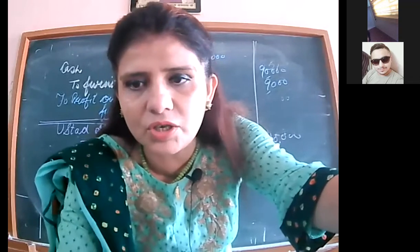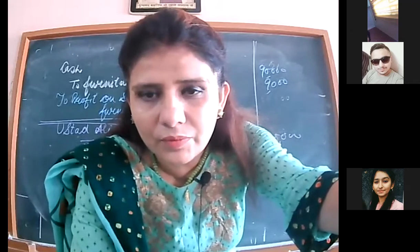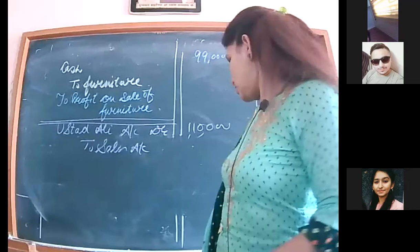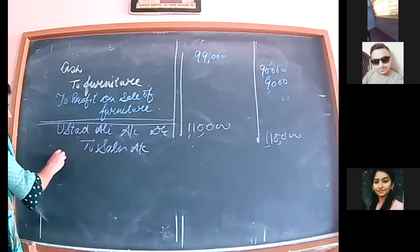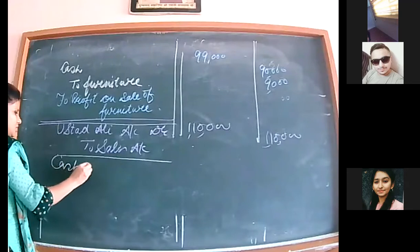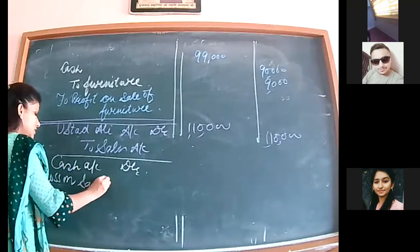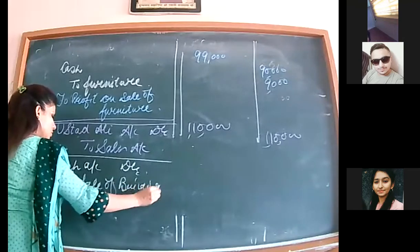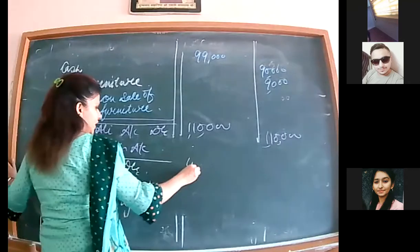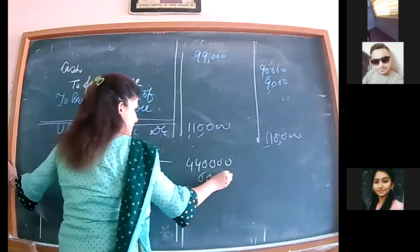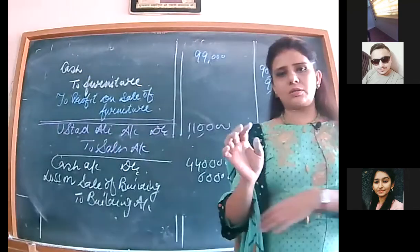Next: building sold at a loss. Entry: cash account debited, loss on sale of building account debited, to building account. All expenses and losses are to be debited — loss on sale of building account debited. Building was Rs. 5,00,000 and we have a loss of Rs. 6,000. Narration: being old building sold at a loss.